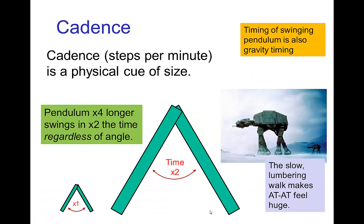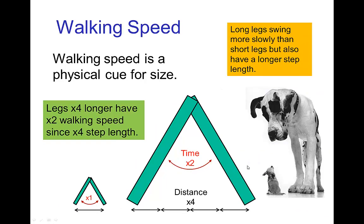It's not just falling motion — a swinging motion also applies. Since the timing of a swinging pendulum is similar to gravity, a pendulum that's four times longer takes twice as long to swing. That doesn't mean a giant with long legs will have a slow walking speed, because it's not just the cadence but also the length of the step. A leg four times longer has four times the step length, so even though it takes twice as long to swing, it covers four times the distance.